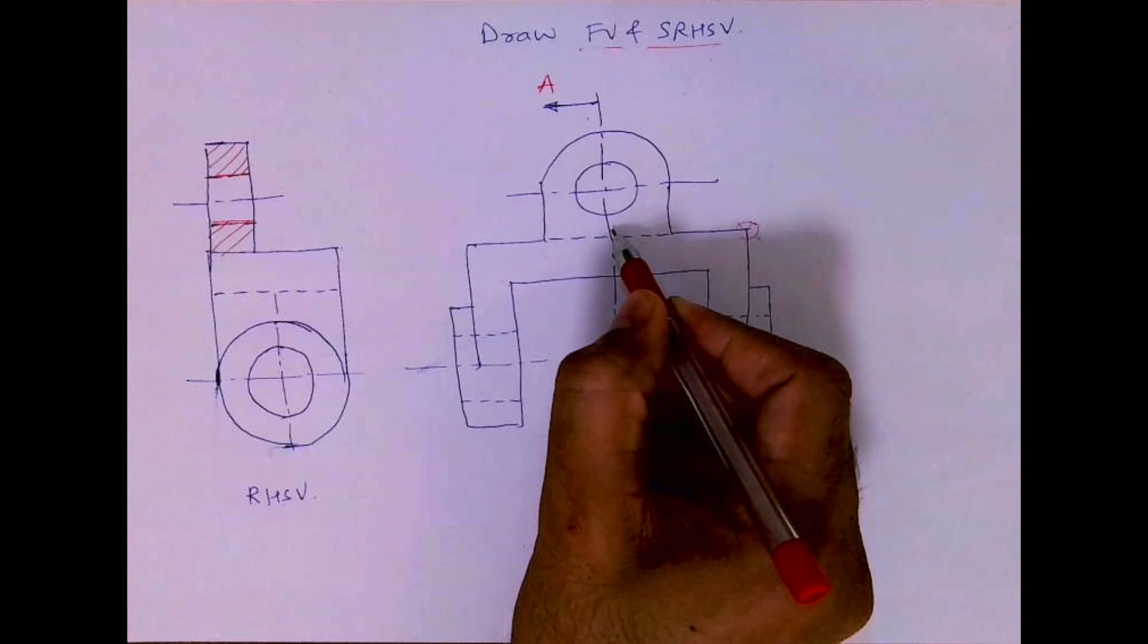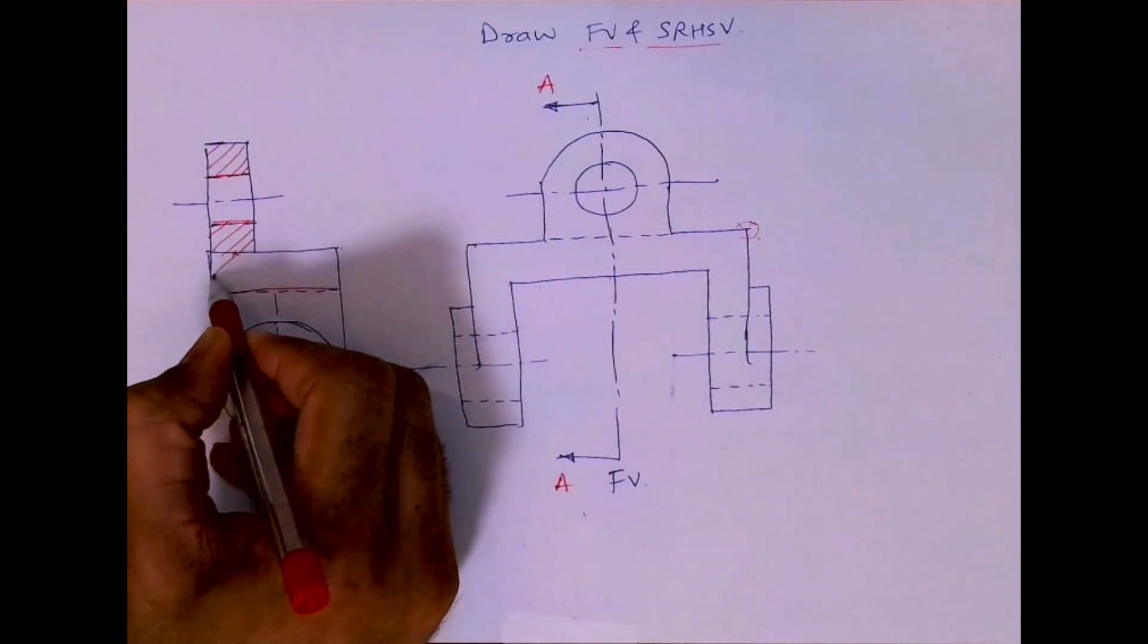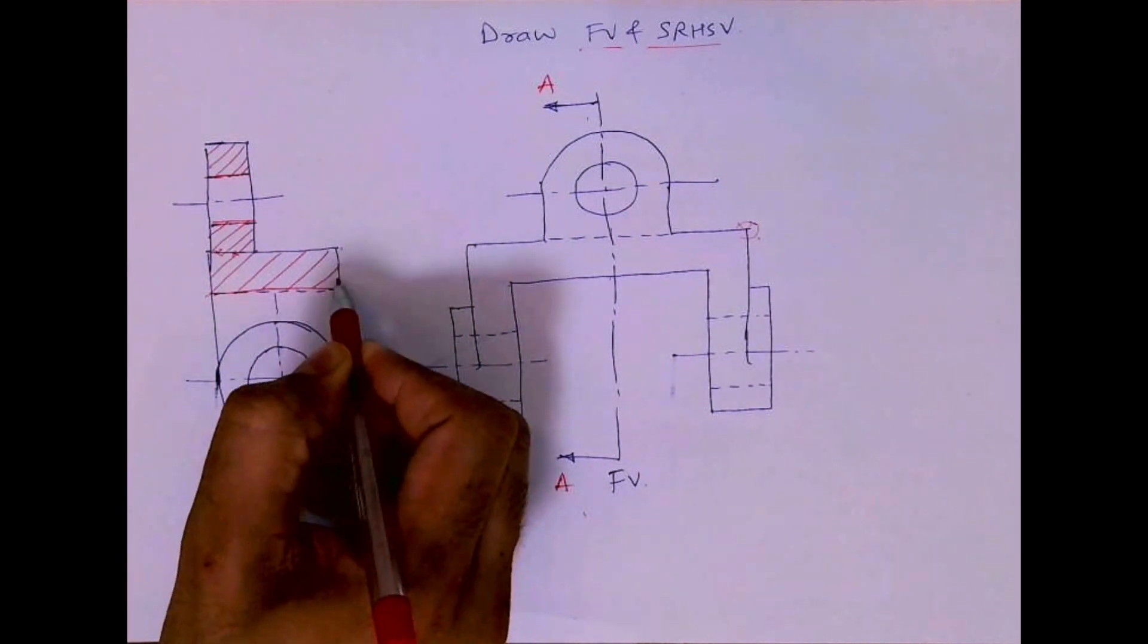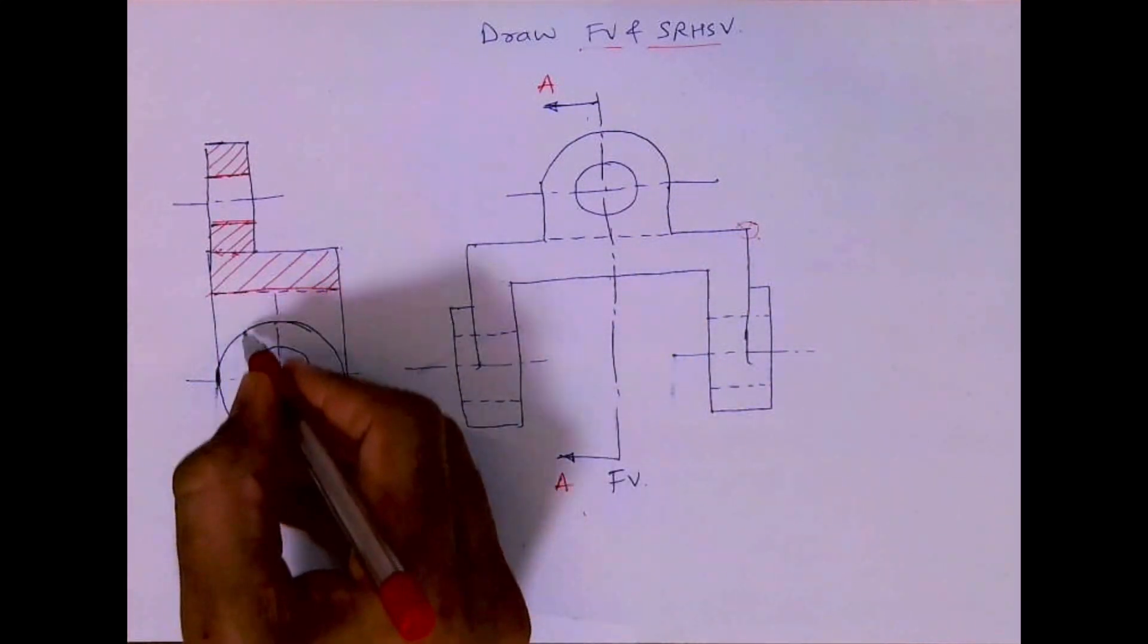Now see, if you see from here, this is gone. This entire thing will be dark, so this dotted will become dark. This line will go and this entire thing will be hatched. So this is sectional side view.